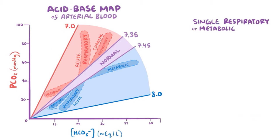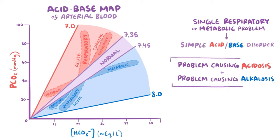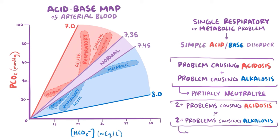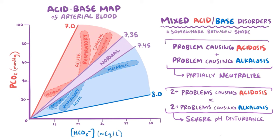If there's a single respiratory or metabolic problem falling within one of these shaded regions, the result is a simple acid-base disorder. Sometimes there can be more than one acid-base disturbance at the same time — for example, one causing acidosis and another causing alkalosis, which would partially neutralize each other. Alternatively, two problems might both result in acidosis or both in alkalosis, compounding each other with no compensation. All these are called mixed acid-base disorders and fall somewhere in between the shaded areas of the map.